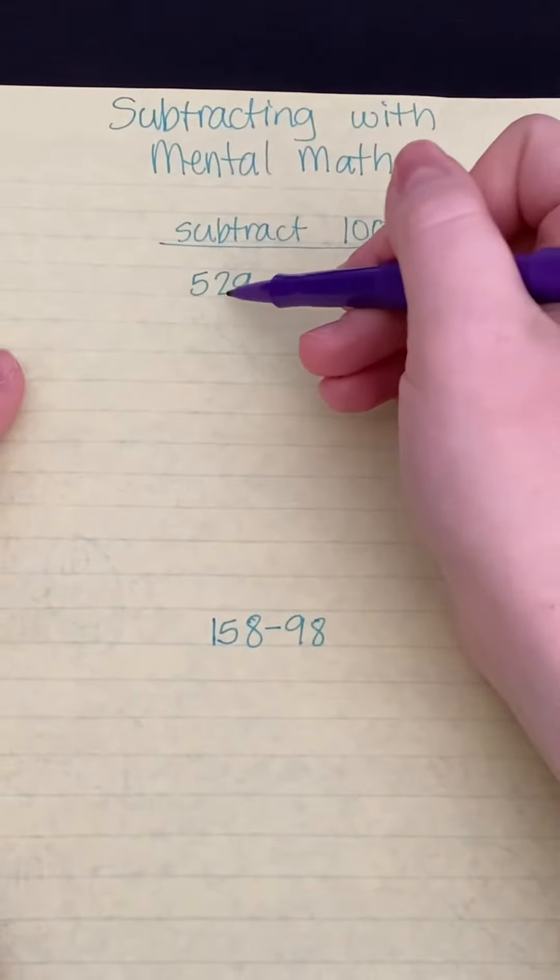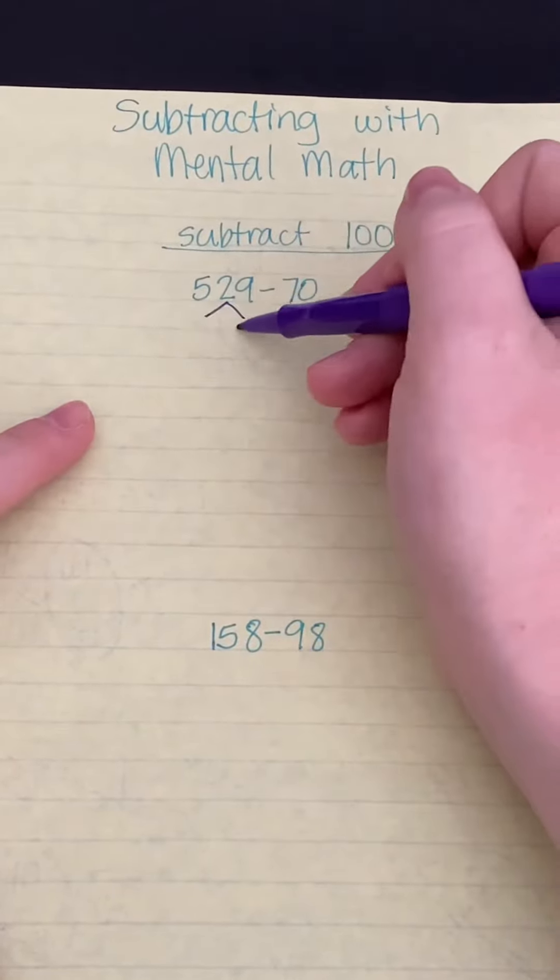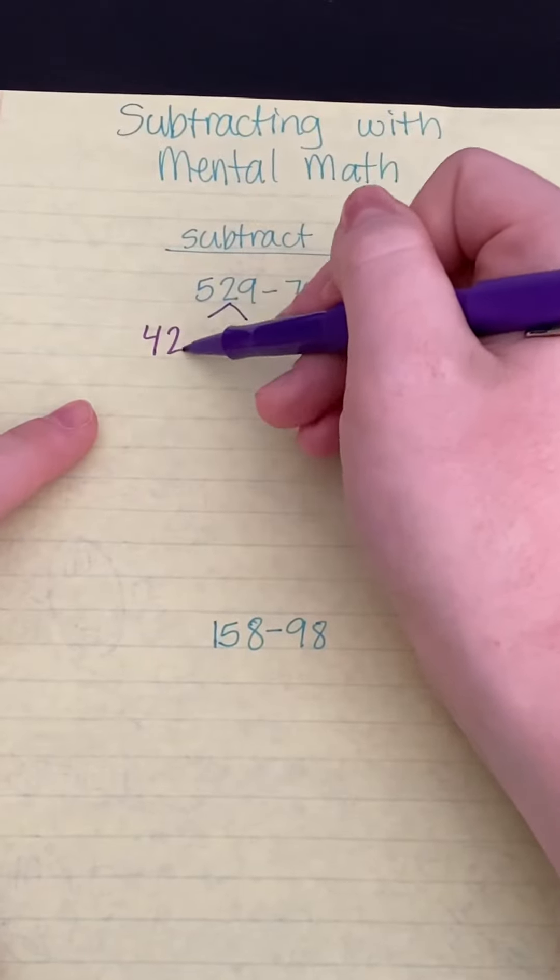So if I break apart my 529 into 100 and then everything else that would be left over after that would be 429.